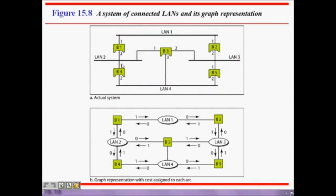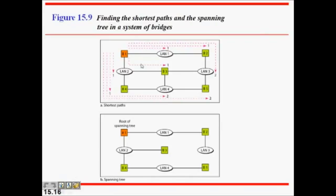To solve this, we treat the bridges and LANs as nodes in a graph and find a minimum spanning tree. In the resulting spanning tree, certain edges are removed — for example, B3 is no longer directly connected to LAN 3 or LAN 4, and B5 is not connected to LAN 3. The root of the spanning tree is identified and used as the basis for the tree structure.